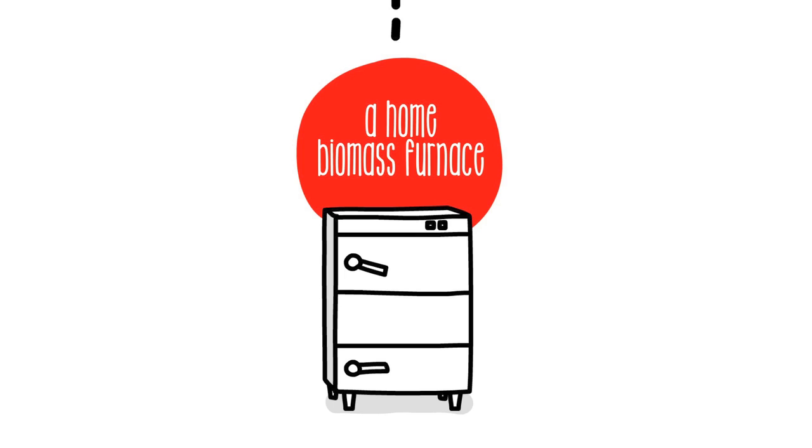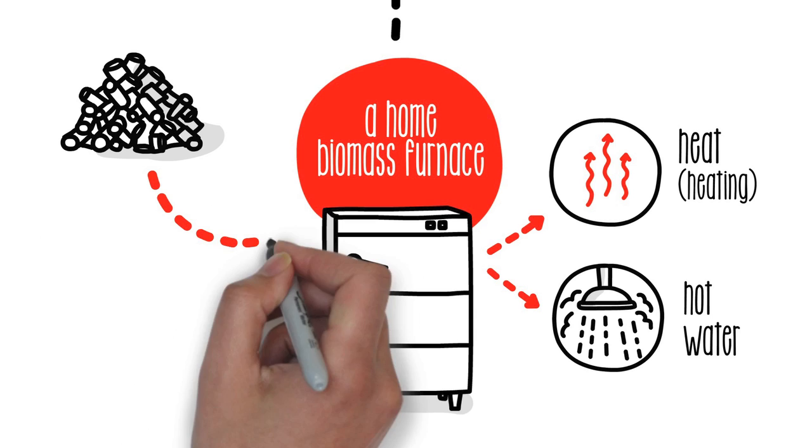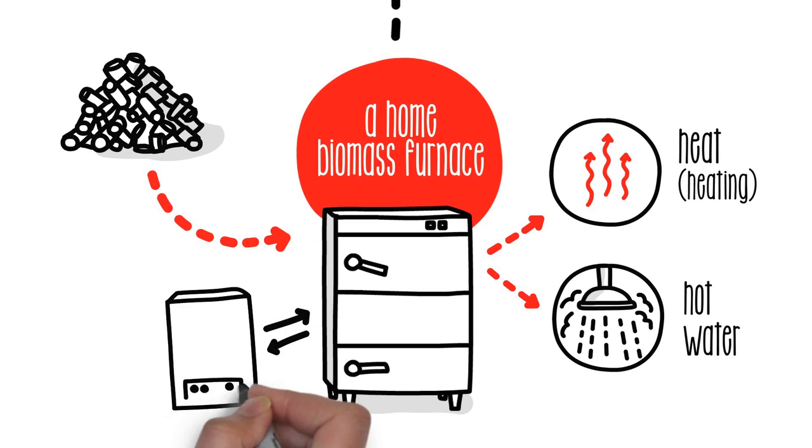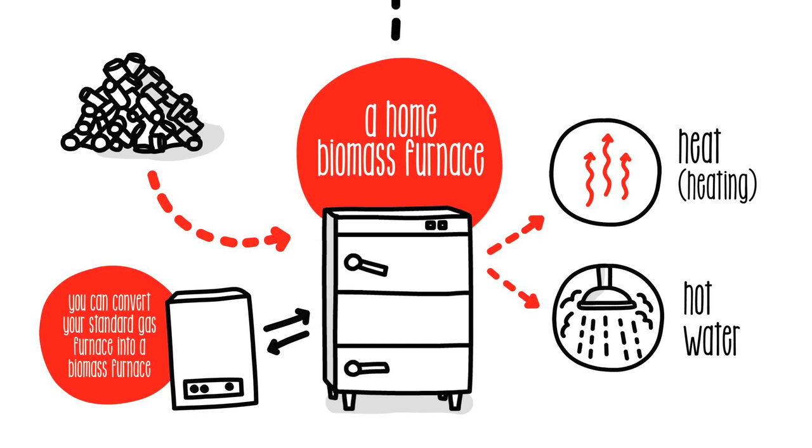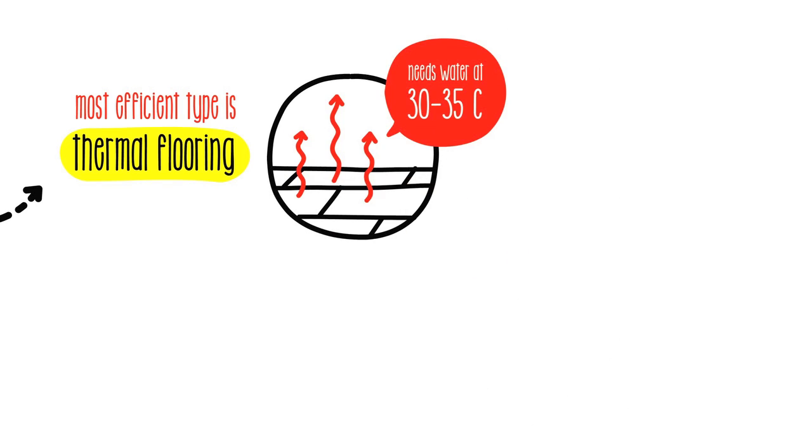This can be used to generate heat and hot water. Biomass is thrown into the furnace, burned, and then it heats the water. You can convert your standard gas furnace into a biomass one relatively easily. For heating, the most efficient type is thermal chlorine. Alternatively, you can use radiators.